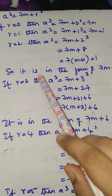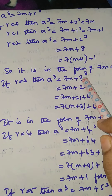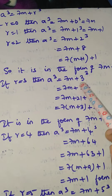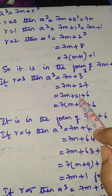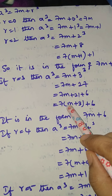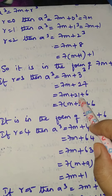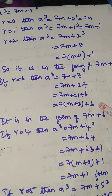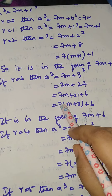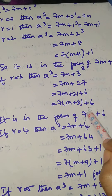If r equals 3, then a cube equals 7m plus 3 cube. 3 cube is 27. We have to expand 27 as 21 plus 6, then taking 7 common: 7 into m plus 3, plus 6, giving 7m plus 6.